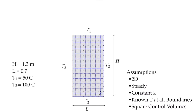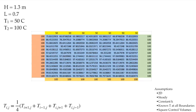So let's look at a specific problem. We'll take the H to be 1.3 meters, the L to be 0.7 meters, and we'll set T1 to be 50 degrees while T2 is equal to 100 degrees. So we can go into our spreadsheet, set those top temperatures to be 50.